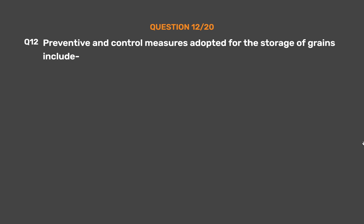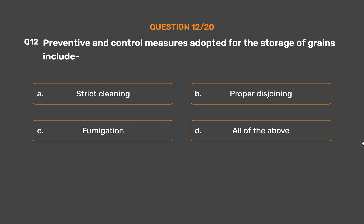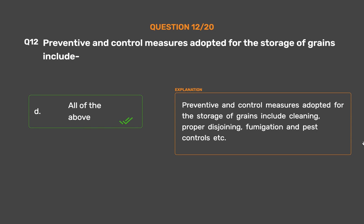Question No. 12. Preventive and control measures adopted for the storage of grains include — Option A: Strict cleaning. Option B: Proper disjoining. Option C: Fumigation. Option D: All of the above. The correct answer is Option D: All of the above. Preventive and control measures for storage of grains include cleaning, proper disjoining, fumigation, and pest controls.